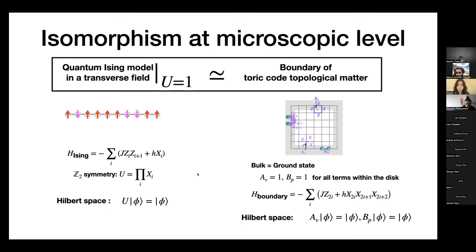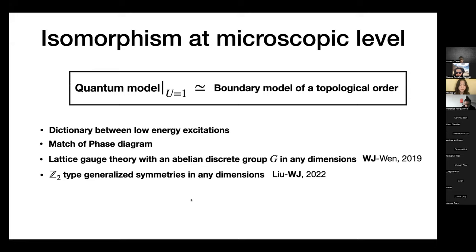Because this map is between all the local operators involved in these models, we can easily build up a dictionary between low-energy excitations. On the left, those are operators generating symmetry charges or symmetry defects such as domain walls. On the right, they are local operators generating topological excitations. Using that dictionary, we can match the phase diagram from both sides perfectly. This isomorphism works for all lattice gauge theories with an abelian discrete gauge group G in any dimensions, and we can also generalize to cases involving higher-form symmetries and subsystem symmetries.